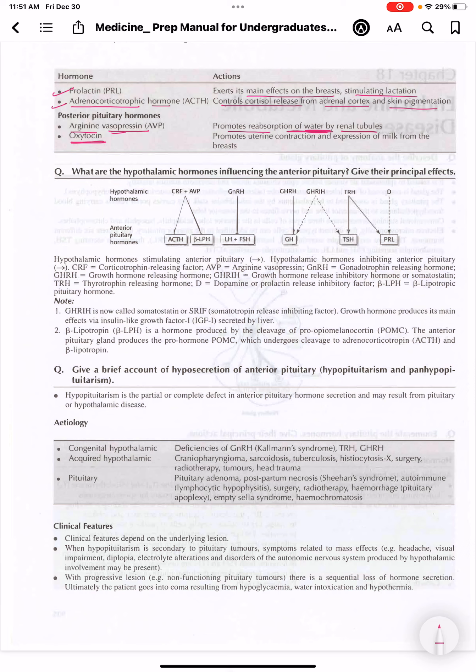Next is oxytocin. Oxytocin's function is to promote uterine contraction and expression of milk from the breast. So oxytocin is responsible for uterine contraction and ejection of milk from the glands of breast. Thank you for watching, like and subscribe.